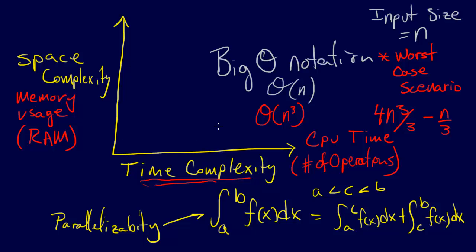In computational complexity theory, they deal with parallelizability using different definitions. They define Turing machines, which are theoretical computers that compute things, and non-deterministic Turing machines, which are like massively parallel computers that can compute many operations simultaneously. This notion is dealt with implicitly in the theory, but it is important.